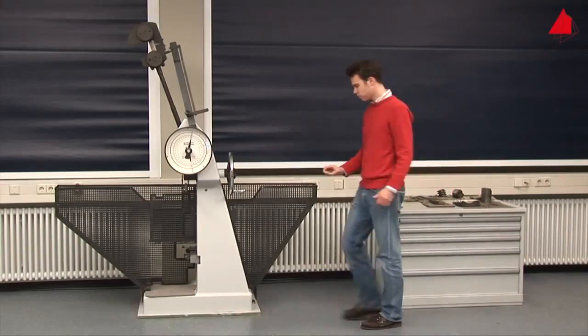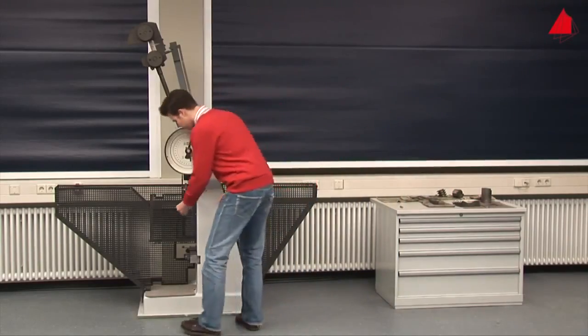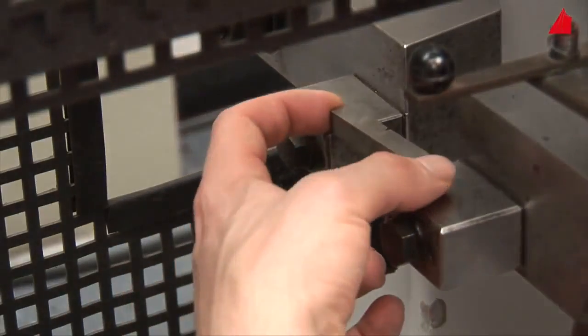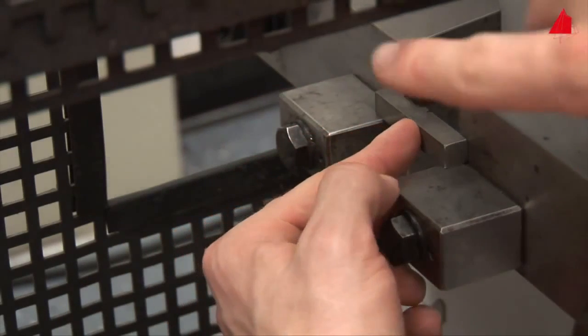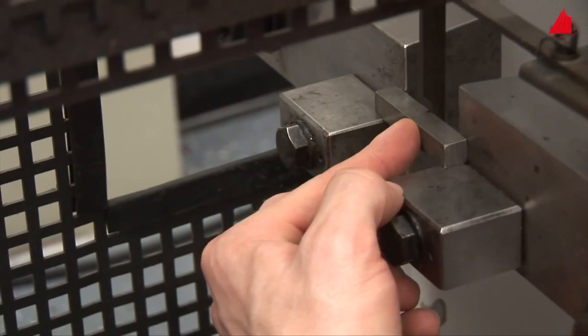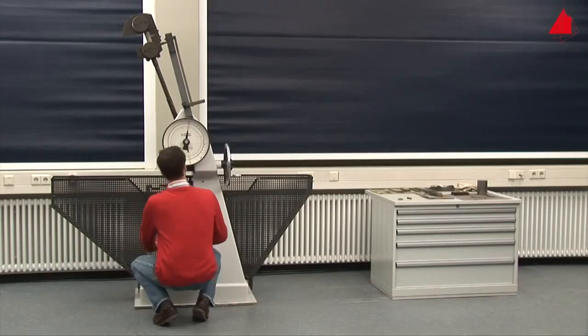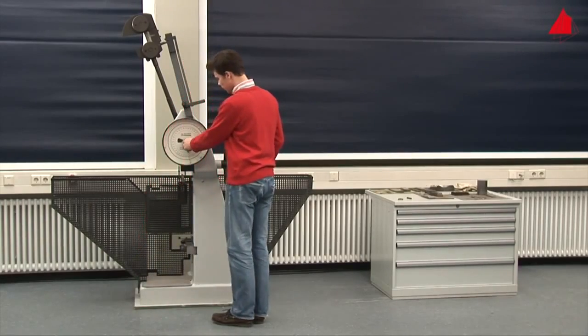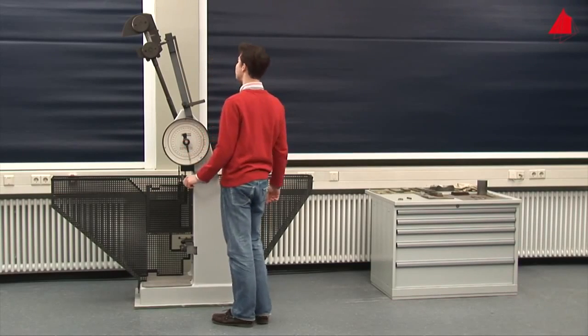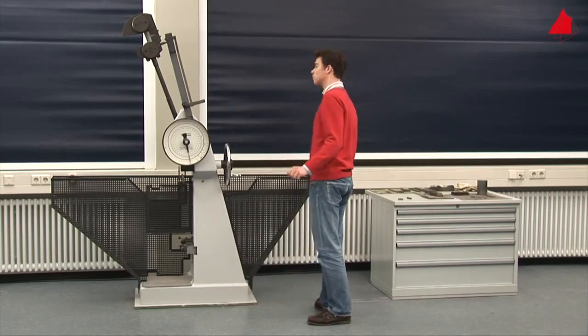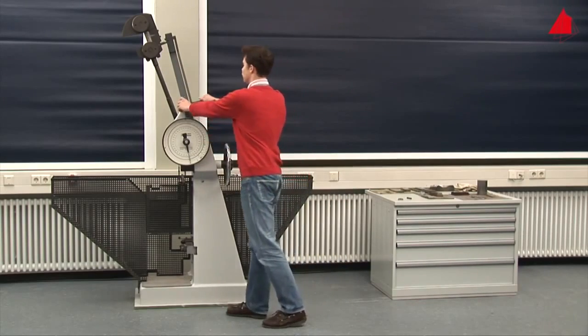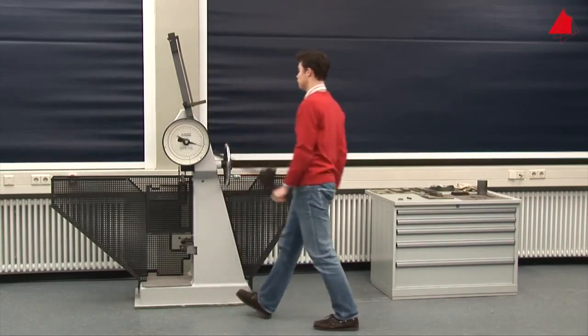The tester places the specimen on a support in the lower part of the machine and adjusts its position with a centering device. Next he turns the drag indicator downwards again and checks that everything is prepared correctly. Perfect! The test can begin. The pendulum is released.